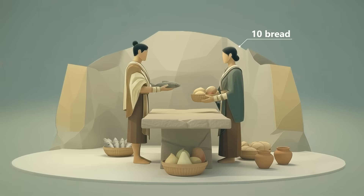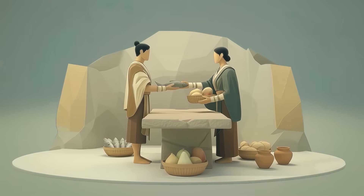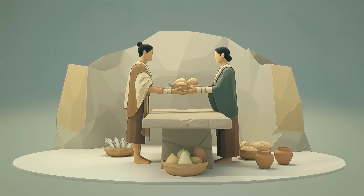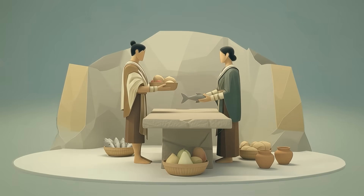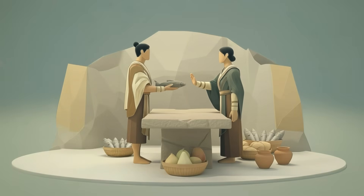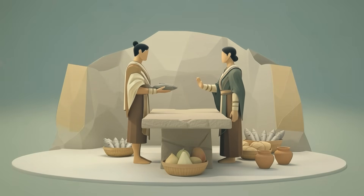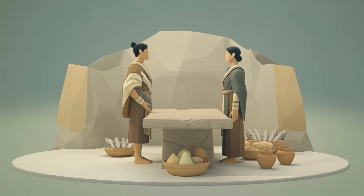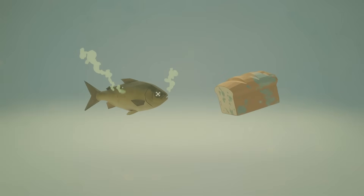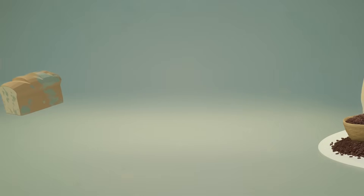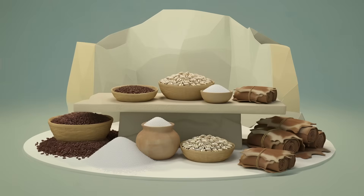For example, Alice has ten loaves of bread but no fish. Bob has three fish but no bread. They agree: Bob gives one fish to Alice and receives two loaves in return. It seems convenient, but this system had serious drawbacks. If Alice already has fish for several days, Bob won't find an interested partner. Many products spoil quickly — fish or bread won't keep for long. So people gradually began choosing a universal commodity for exchange: salt, furs, cacao beans, or cowrie shells.